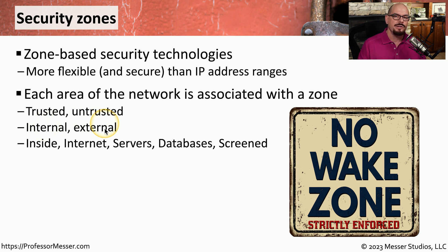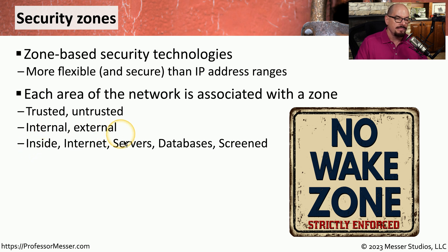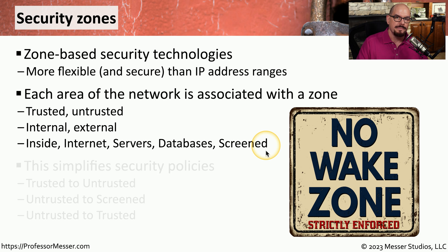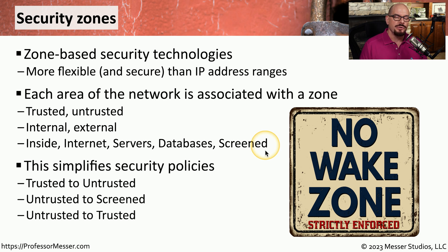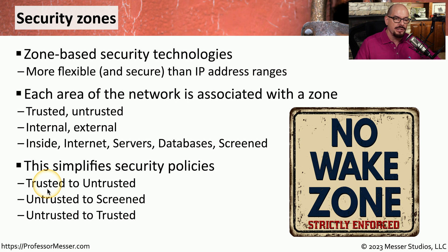If you wanted to expand on those descriptions to provide more granular security, you can have many different zones — some that might be called inside, internet, servers, databases, or screened. This makes it easier to understand what the security rule is based upon, and it makes it easier to maintain these rules in a very large rule base. For example, we might have a rule that says we are allowed to send data from a trusted zone to an untrusted zone, or you might allow access from the outside, the untrusted part of the network, to a screened zone, which is where our screened subnet might be.